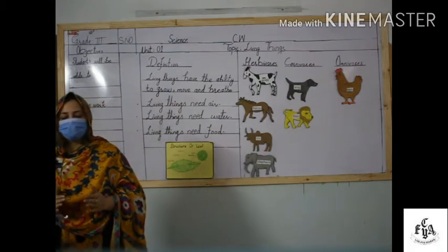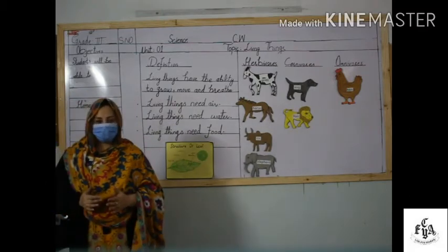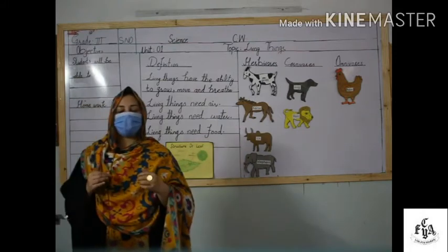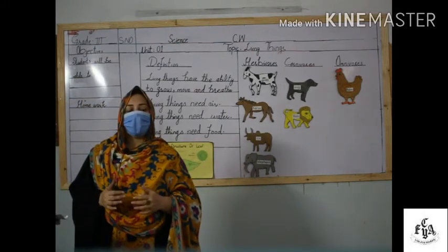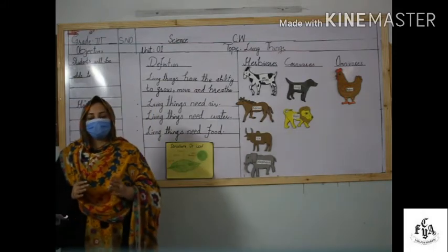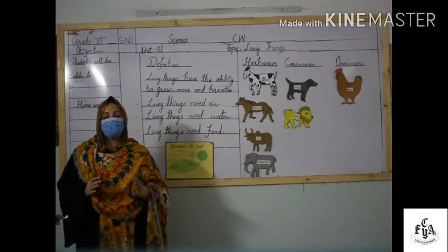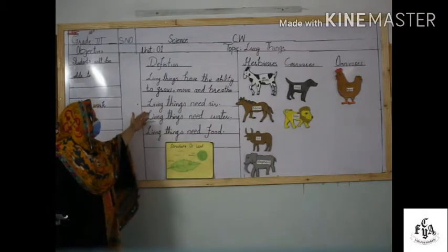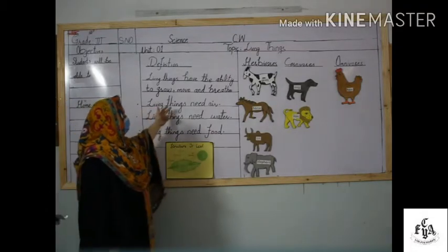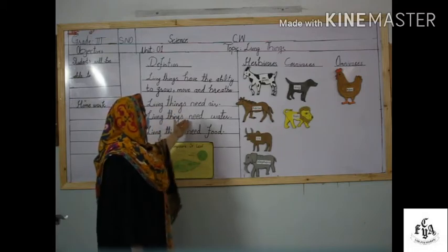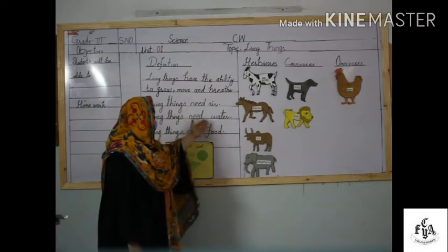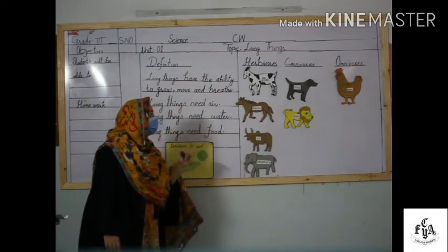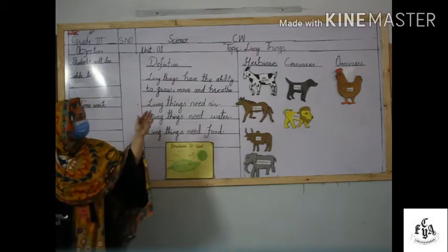This was about living things needing water. Number three: living things need food. All living things need food to stay alive. Food gives us energy and helps us to grow and stay healthy. This was all about the three points: living things need air, water, and food.